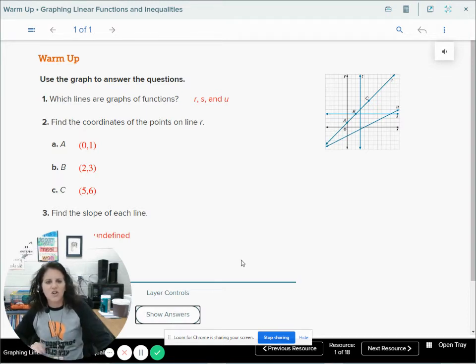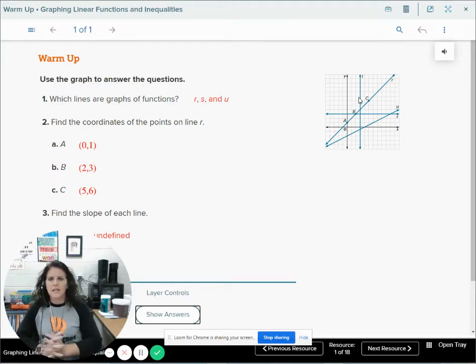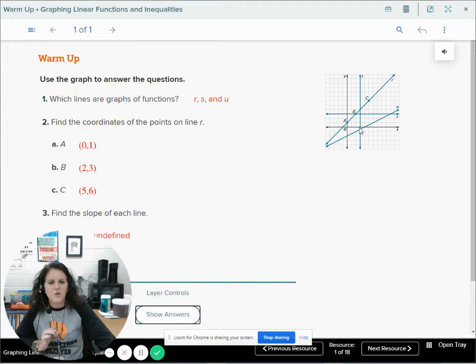Which lines are graphs of functions? Functions are lines R, S, and U. T is not a function because it's straight up and down, and in order for something to be a function, we know that each X can be paired with exactly one Y. We have the value of X here being paired with multiple different Y values, so that is why T is not a function.